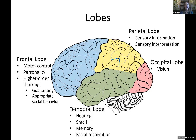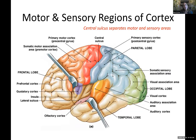The temporal lobe is easy to remember because it's right under the ear. Now we're going to get into more functional regions, starting with the central sulcus. The premotor cortex is anterior to the precentral gyrus, which is our primary motor cortex. The postcentral gyrus is our somatosensory cortex - all of this is in reference to the central sulcus.